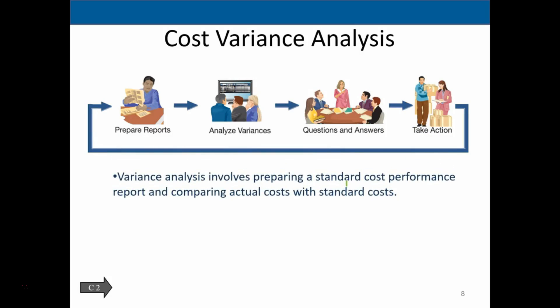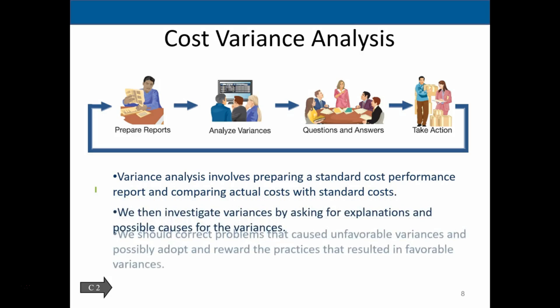In cost variance analysis, we prepare a standard cost performance report and compare actual costs to standard costs. Once we run this analysis, we investigate variances by asking for explanations and possible causes — for example, why material or labor costs more than expected, whether it's a rate issue or an efficiency issue. Even favorable variances are reviewed: if differences are significant, we tighten our budgeting and plan for better performance. We should correct problems causing unfavorable variances and adopt practices that resulted in favorable ones.